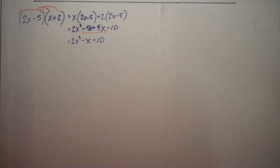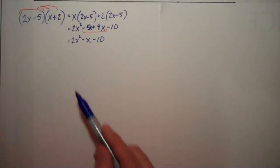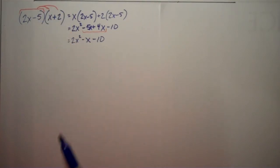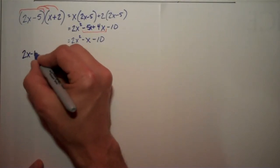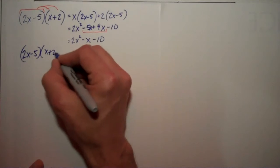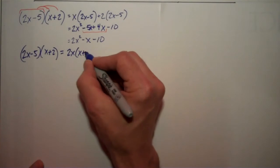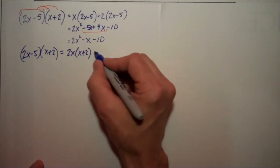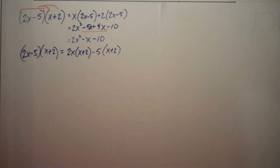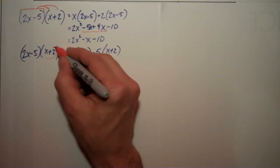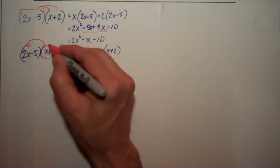Now, one thing I want to point out is I didn't have to distribute this one across the other one. I could have distributed this one. So let's see how that would work. We would have 2x minus 5 times x plus 2 equals 2x times x plus 2 minus 5 times x plus 2. You see what I did? I took the x plus 2 and treated it as one entity and said, I'm distributing this across this binomial here.